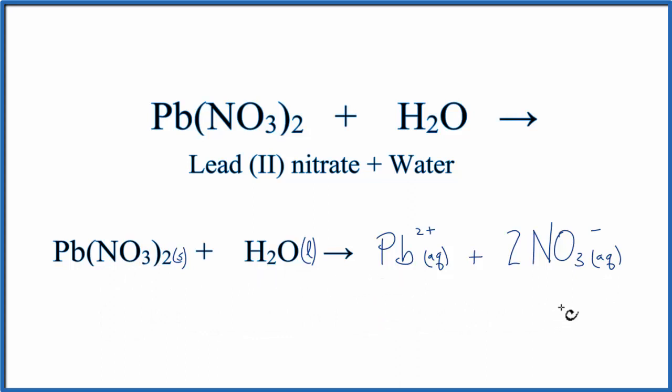Note that some people don't really consider this a chemical reaction because with the Pb and the NO3s, if all the water were evaporated, you'd go right back to your solid Pb(NO3)2. But others say it is a chemical reaction because we've split this up. Either way, this is how you can write the equation for Pb(NO3)2 plus H2O.